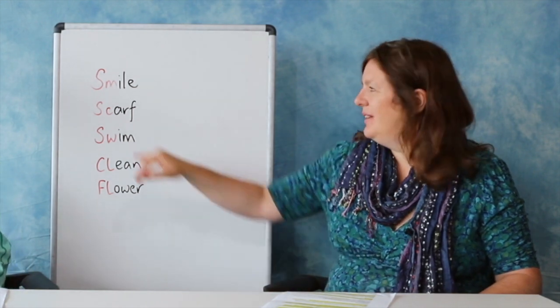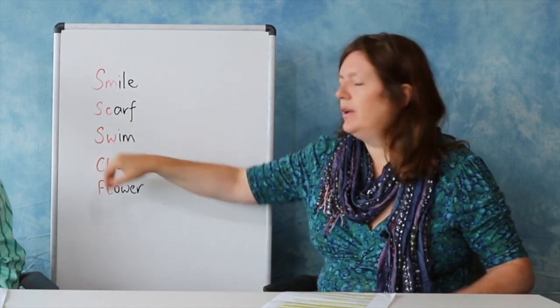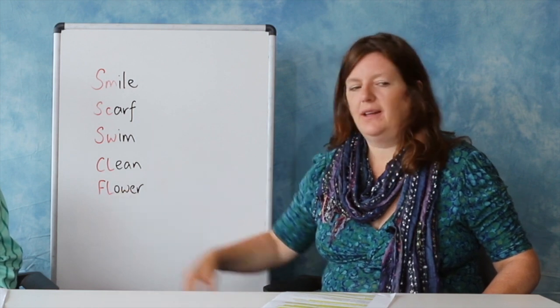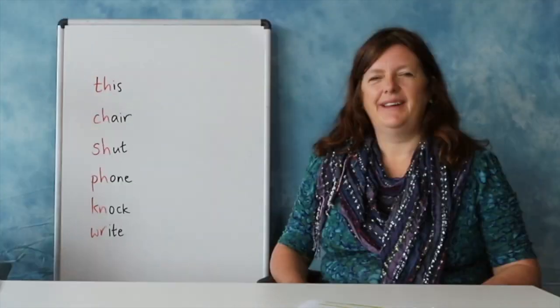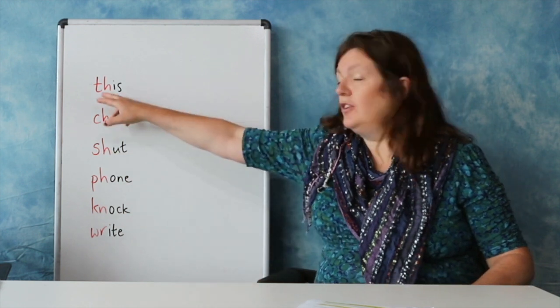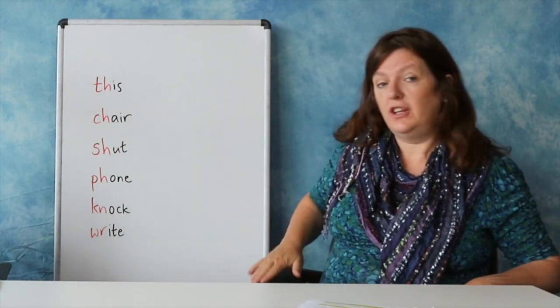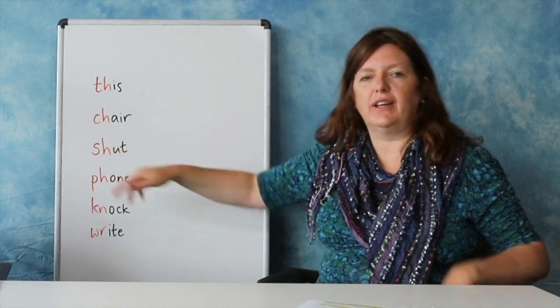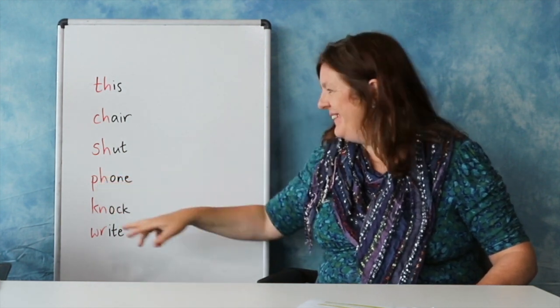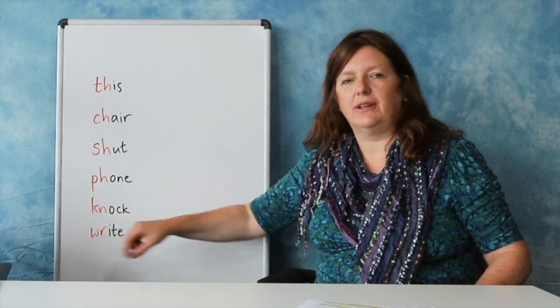Here are some examples. Some new sounds have a completely different sound. So for example, if we put together T and H, we have a TH sound: 'this'. C and H together is a CH sound: 'chair'. S and H is a SH sound: 'shut'. P and H makes an F sound: 'phone'. K and N make an N sound: 'knock'. And W and R is an R sound: 'write'.